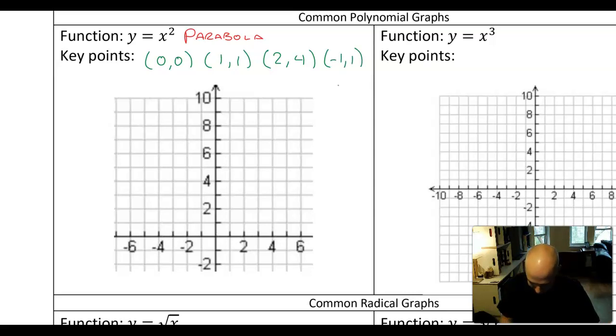Let's go ahead and plot those points on the graph: (0,0), (1,1), (2,4), and also (-1,1). If you feel like going further, maybe plot (-2,4) as well. From those points you can connect them smoothly to form the graph of a parabola.